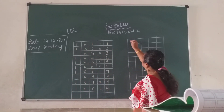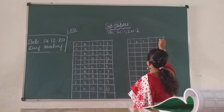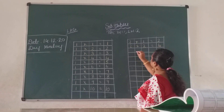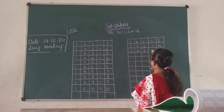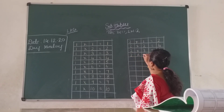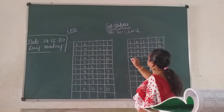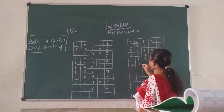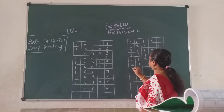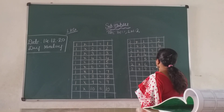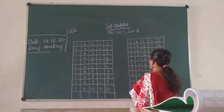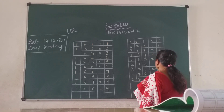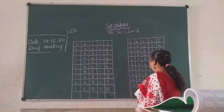Now two ones, children. Two ones are two. Two twos are four. Two threes are six. Two fours are eight. Two fives are ten. Two sixes are twelve. Two sevens are fourteen. Two eights are sixteen. Two nines are eighteen. Two tens are twenty.